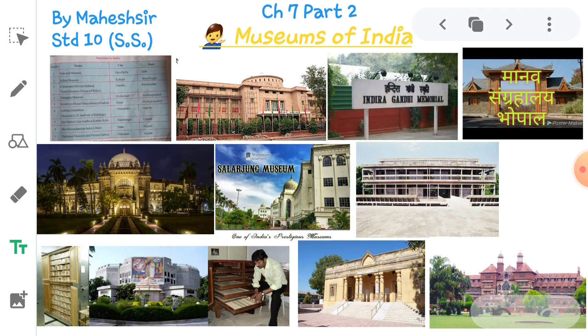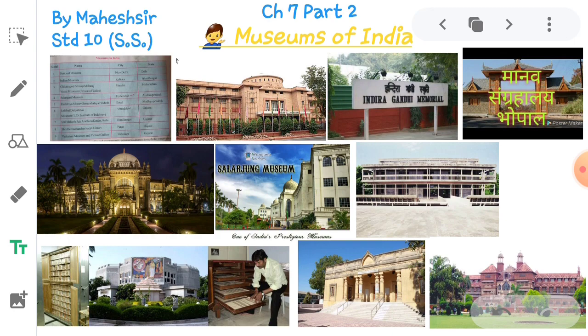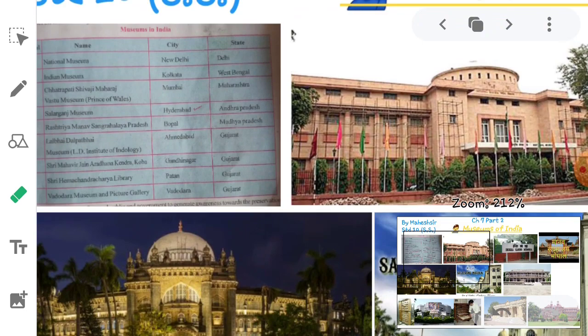Museums perform important tasks of preserving valuable things carefully. A museum is a place where antiques and ancient products can be kept safely. Let's talk about some famous museums in our country — as you will see on the slide, this is the name from your textbook. The National Museum in New Delhi.